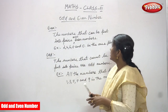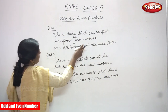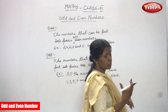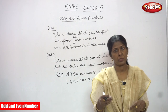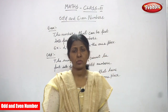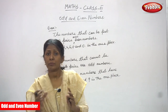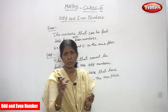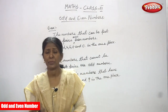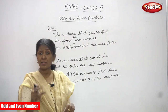Now we are going to see odd and even numbers. First we must know what is an even number. The numbers that can be put into pairs are even numbers. For example, in the class we select some children for a competition — a dance, music, or debate competition. We select six students as a group, and we pair them: two, two, two — that means three pairs. That is called an even number.